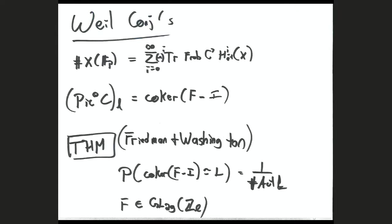Forget about geometry for a moment. This Frobenius matrix F is a priori an element of GL_{2g}(Z_l). You can ask a purely random matrix theory question: what's the probability that the cokernel is isomorphic to a given l-power abelian group L? The answer is just like Cohen-Lenstra — it's 1 over |Aut(L)|. But neatly, this is an honest theorem about matrices, not a conjecture. In reality there's a Weil pairing on the Jacobian, so Frobenius actually lives in GSp_{2g}(Z_l), and you can prove similar theorems for GSp instead of GL.